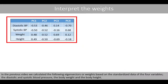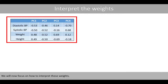In the previous video, we calculated the following eigenvectors, or weights, based on the standardized data of the four variables: the diastolic and systolic blood pressure, the body weight, and the body height. We'll now focus on how to interpret these weights.